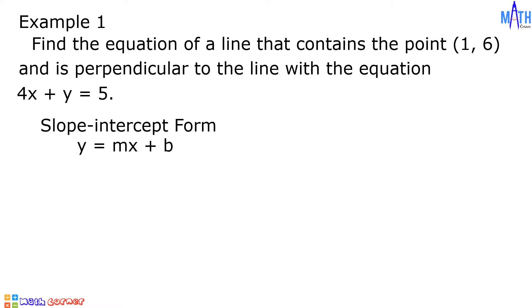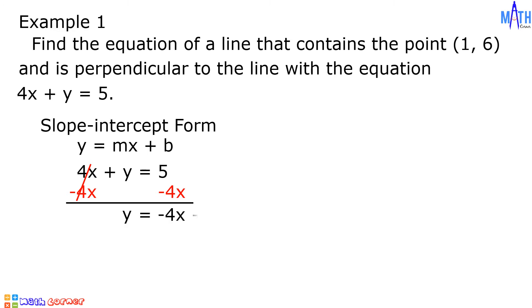To do that, we will add negative 4x on both sides of the equation. On the left side, 4x plus negative 4x is equal to 0, and 0 plus y is equal to y. On the right side, we have negative 4x plus 5. And we have y equals negative 4x plus 5. The value of m is equal to negative 4. The slope here is negative 4.